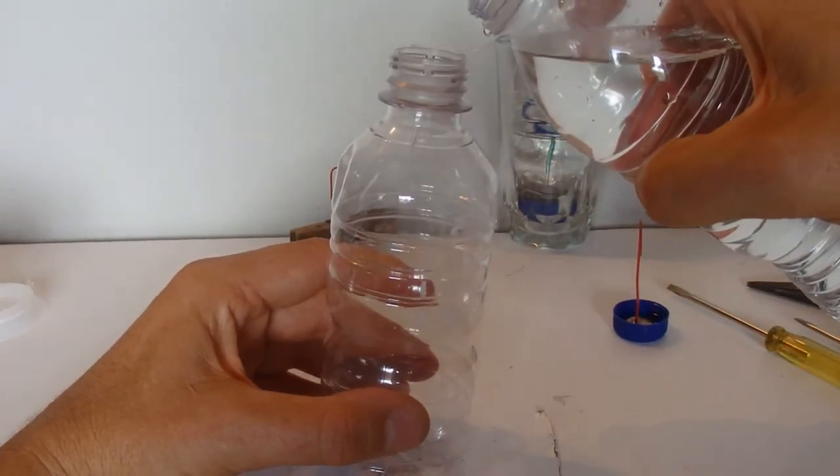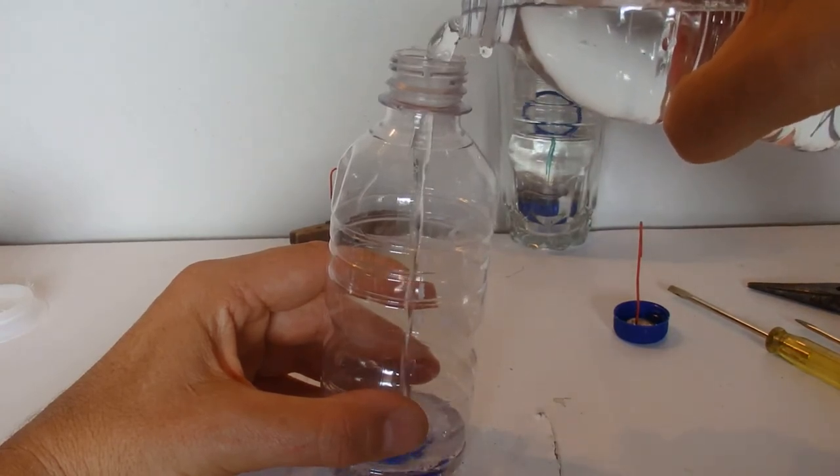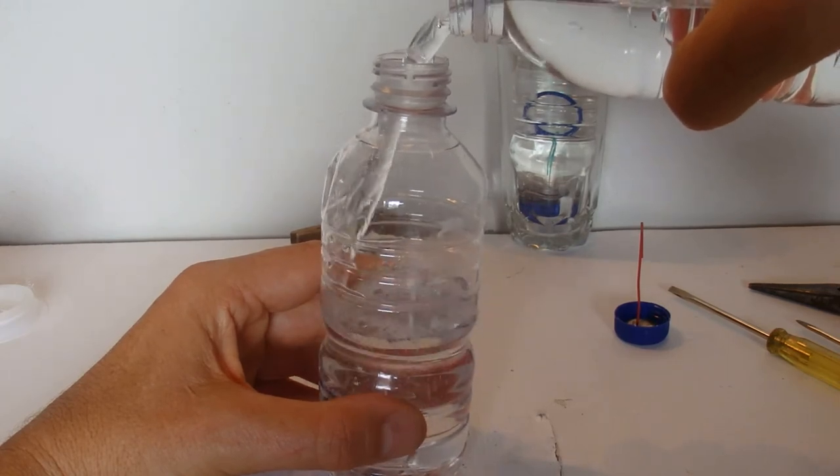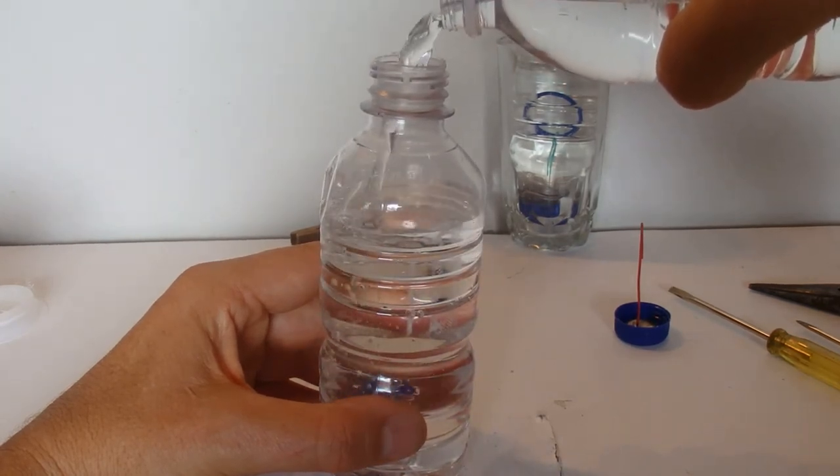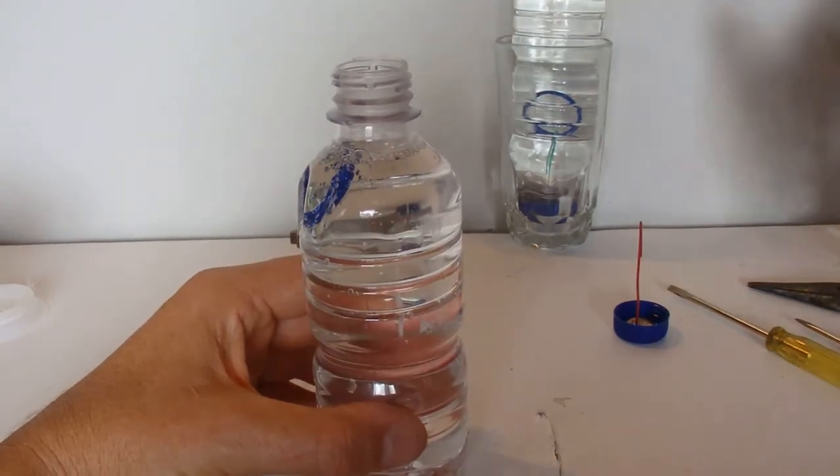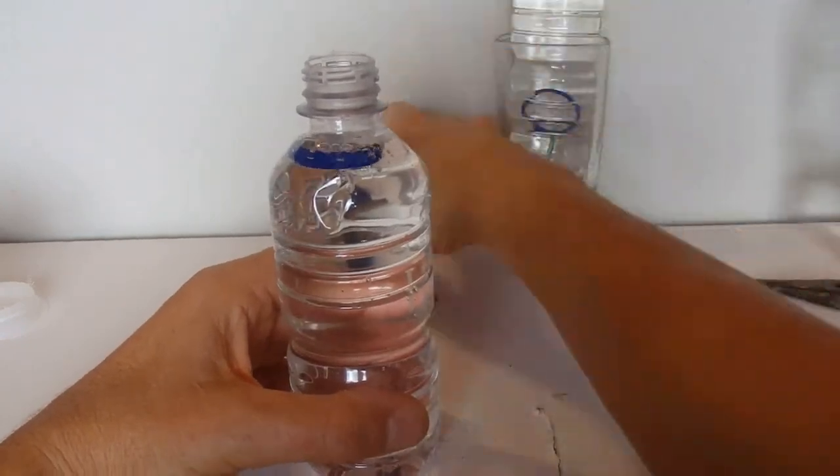We just need to fill up the bottle with water. That's our next step, fill it up to almost the top, just a little bit to the top. You can see there's the blue ring floating on top of it.